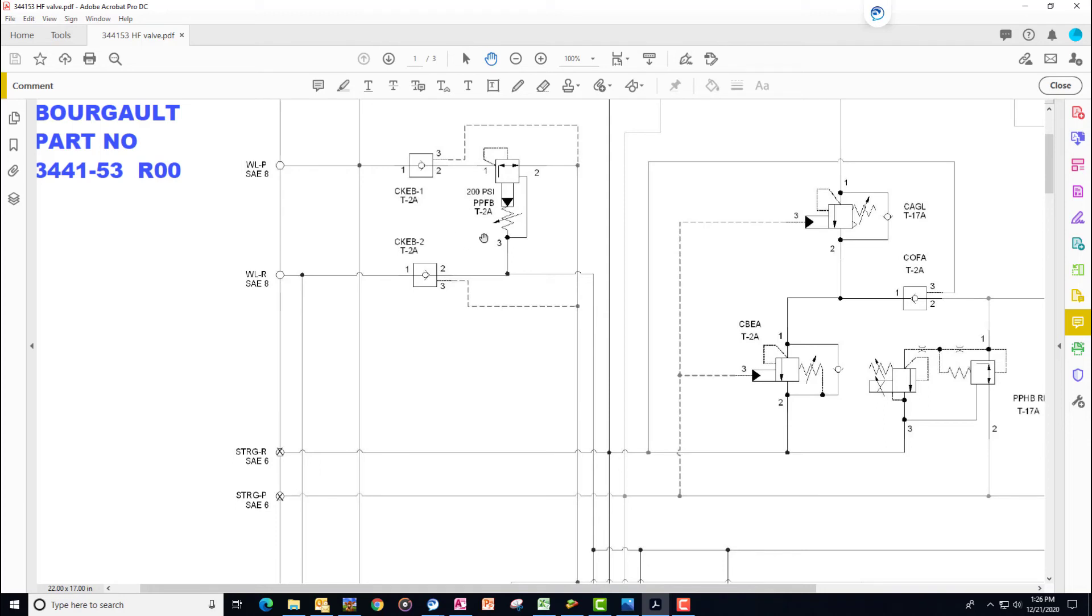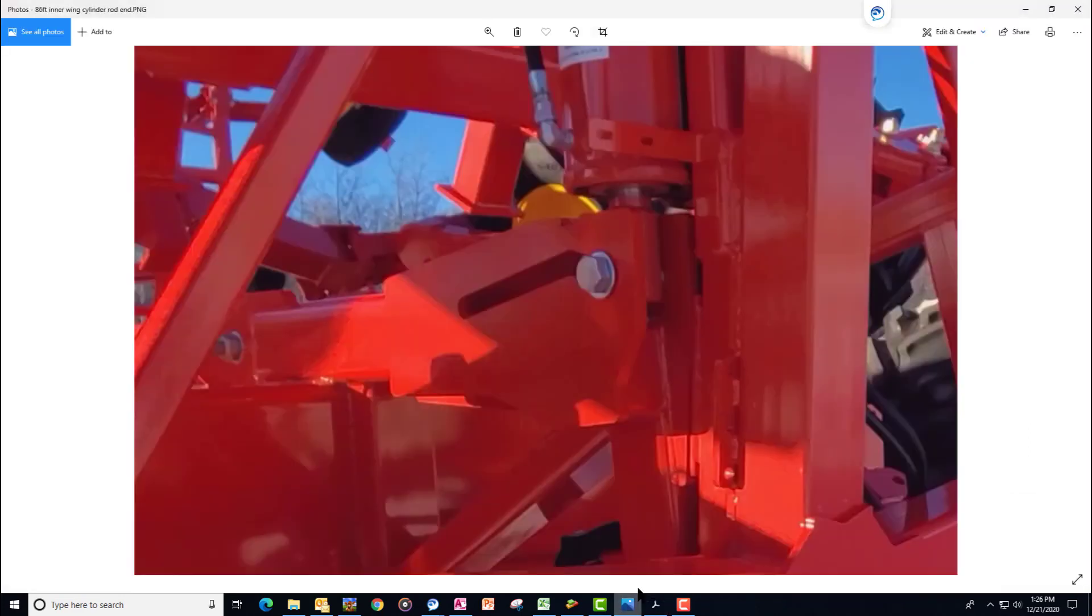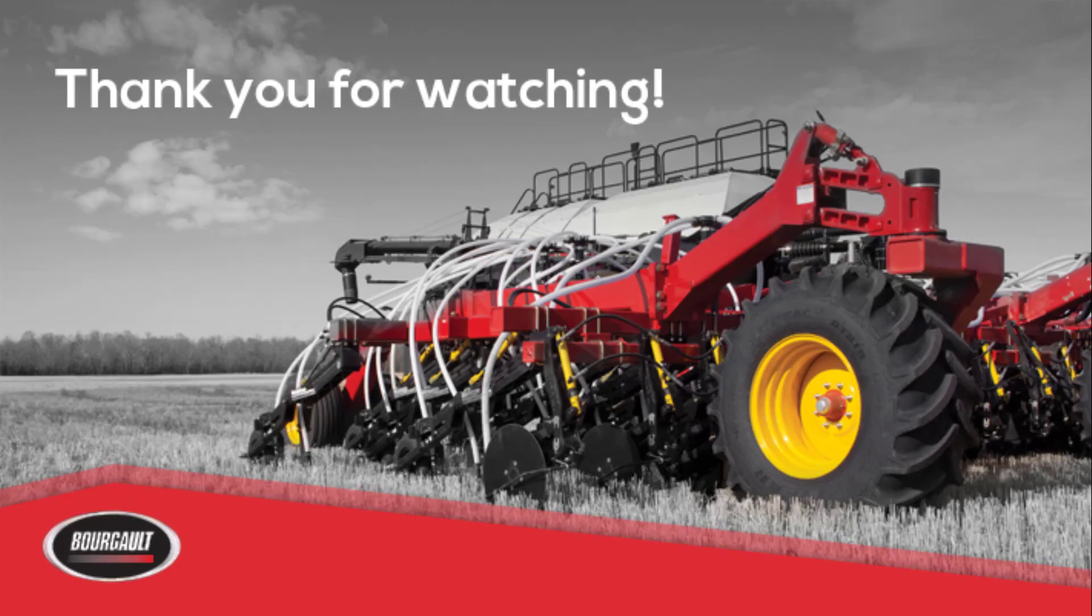So what's unique about an 86 foot drill? An 86 foot drill does not have a fixed pin on the inner wing rod end. There is a slot on this linkage that allows that frame to float just by the weight of that frame on the outer wing.